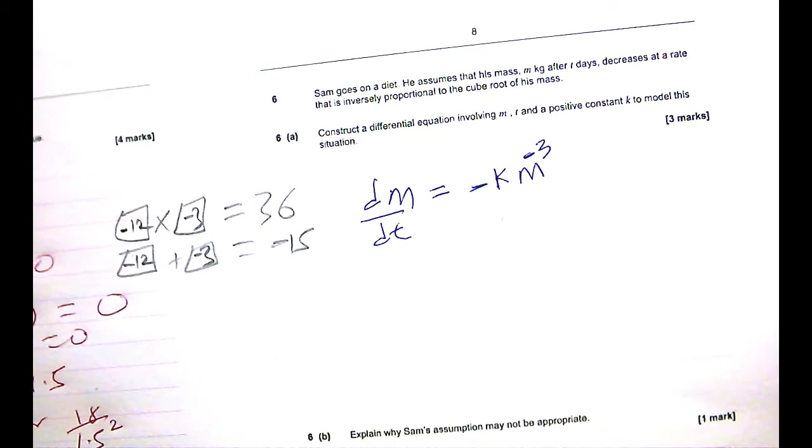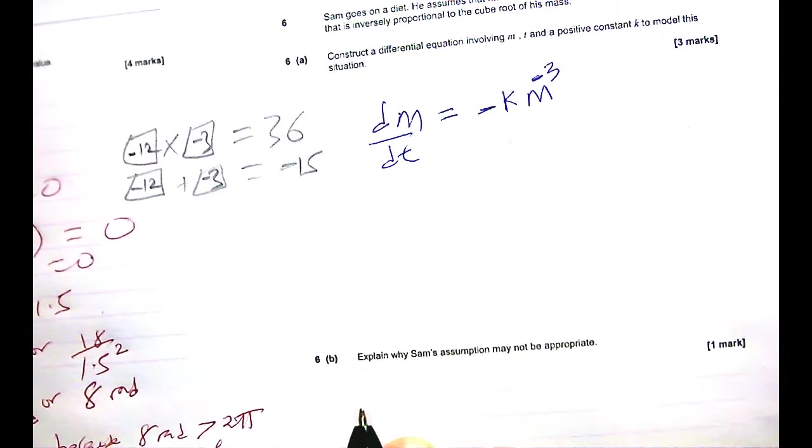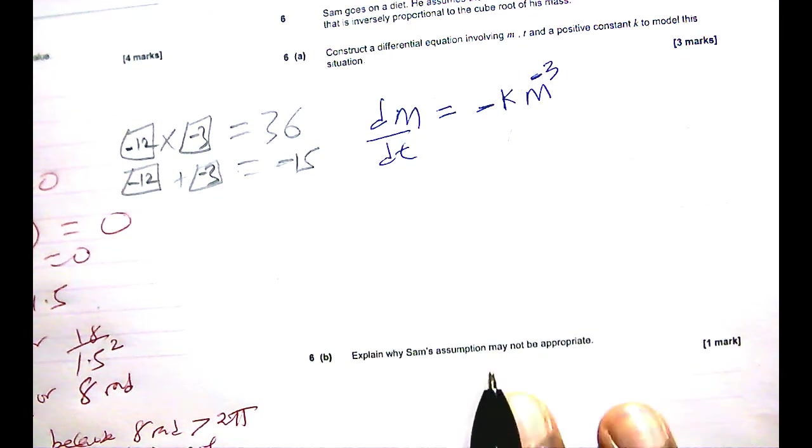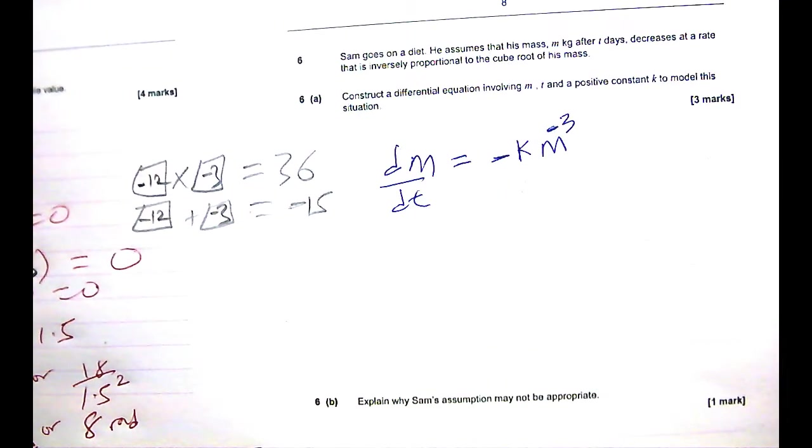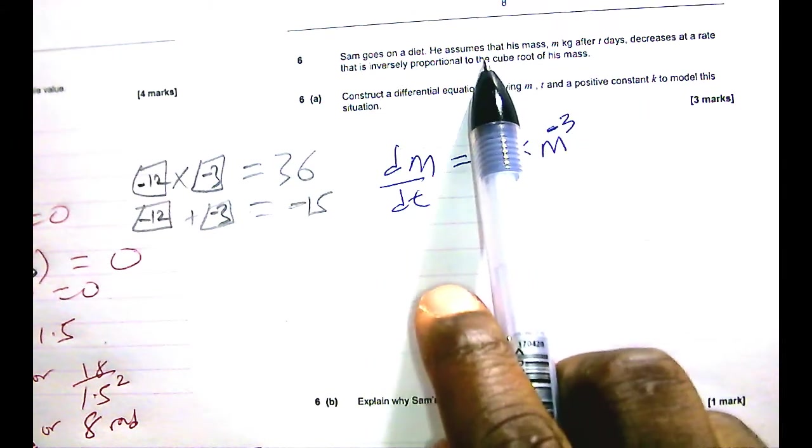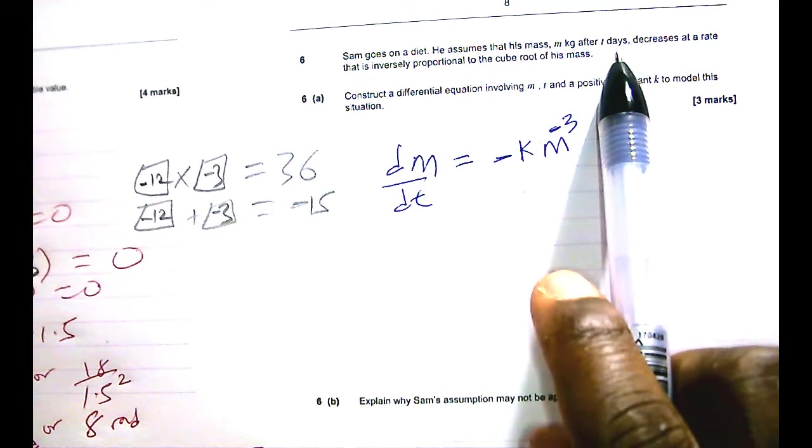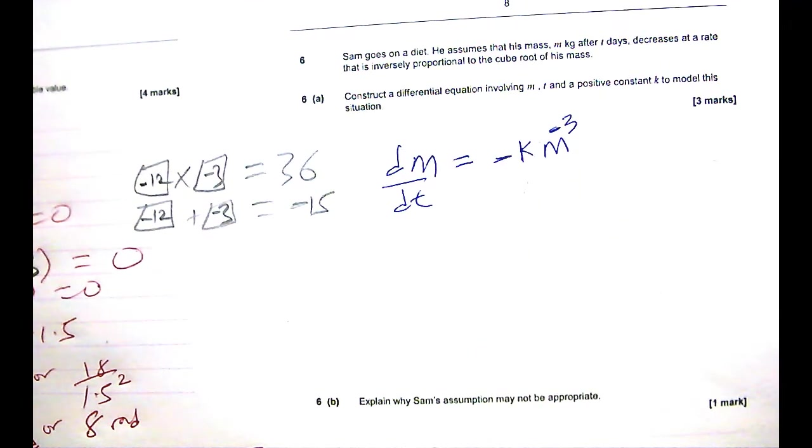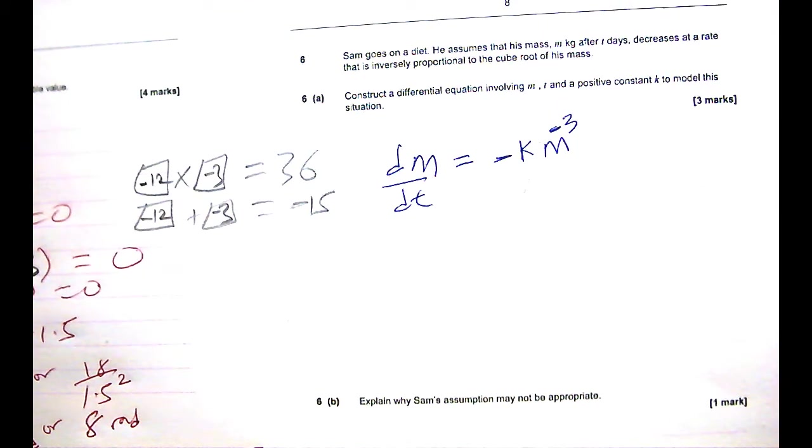So, explain why Sam's assumption may not be appropriate. Well, this is quite obvious. Why do you think his assumption may not be appropriate? For just one mark, I think you can make up anything and it will still be correct. So he's going to die. He assumes that his mass after t days decreases at a rate that is inversely proportional to the cube root of his mass. So why is this not appropriate?